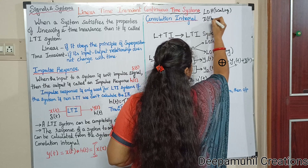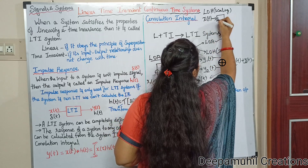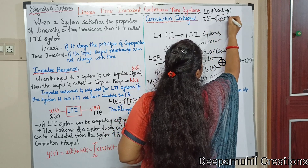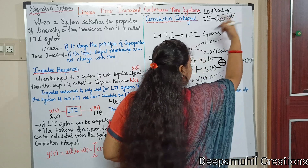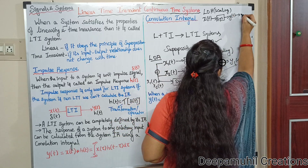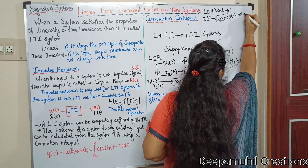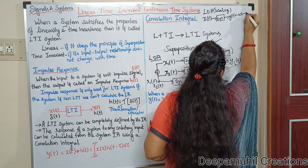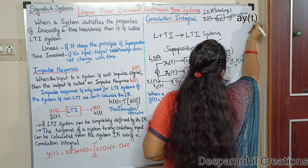Given input x(t) passing through the system gives output y(t). Now, if we scale the output by a scaling factor A, the answer should be A multiplied by y(t). Then, if we scale the input first — that is, A into x(t) — and pass it through the system, the output should again be A into y(t).